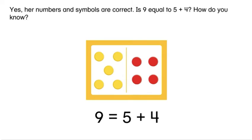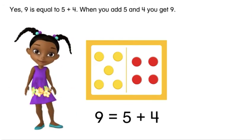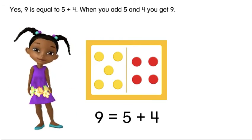Is nine equal to five plus four? How do you know? Yes, nine is equal to five plus four. When you add five and four you get nine.